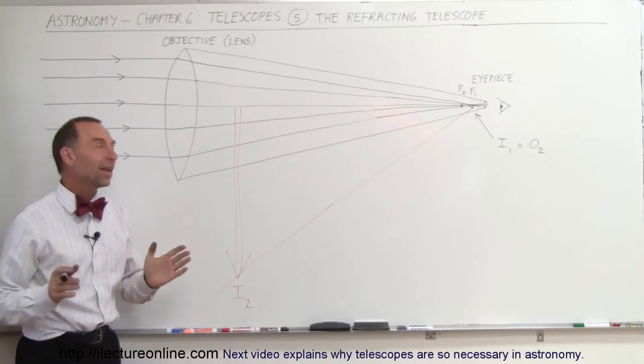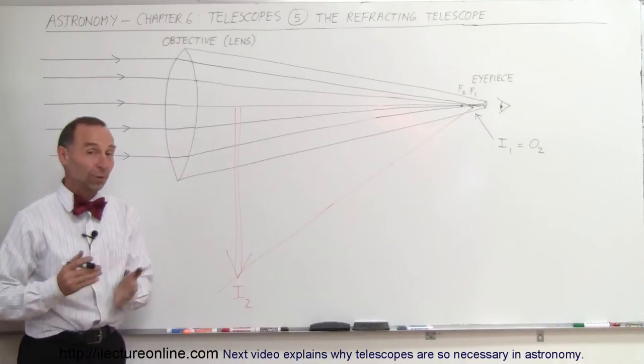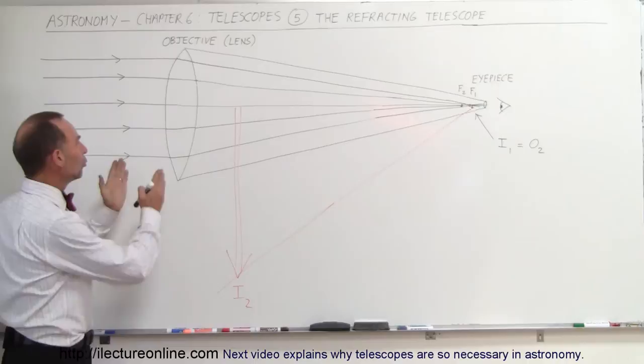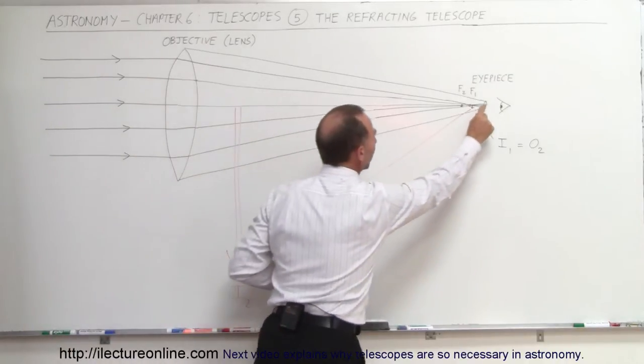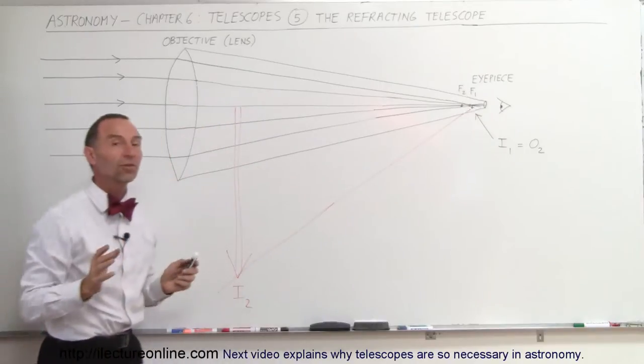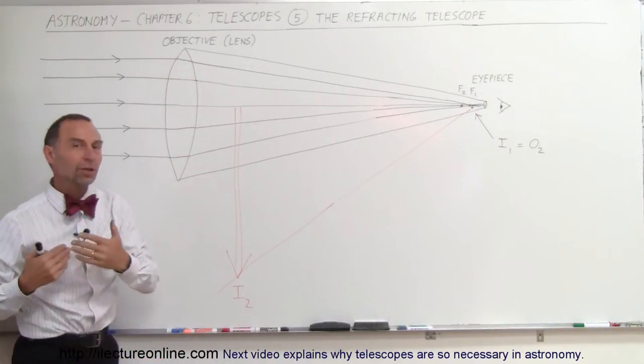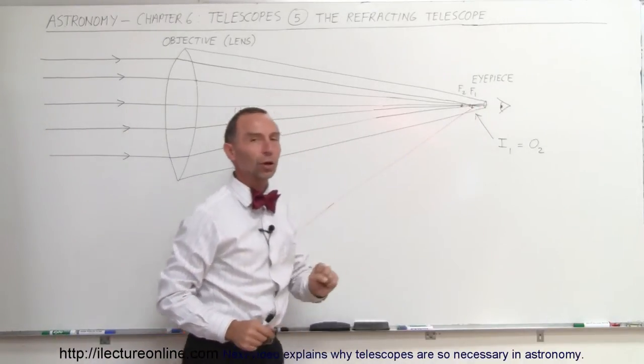Welcome to iLectureOnline and now let's see how a telescope is actually built. We're talking about a refracting telescope because there's a lot of different kinds of telescopes. But the telescope that takes two converging lenses, a very big one up front and a small one in the back. They're both converging lenses, one called the objective lens, sometimes simply called the objective for short, and the small one in the back here, the eyepiece to which the observer will look.